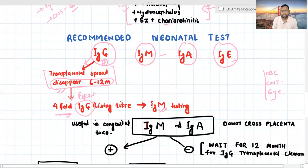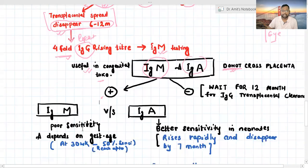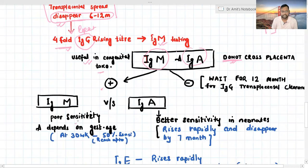Next, we can go for IgM and IgA because it is useful in determining congenital infection. They do not cross the placenta. IgG crosses, these two do not cross the placenta. If it is positive, we have to know the sensitivity pattern. IgM has poor sensitivity and it depends on gestational age. The sensitivity increases to 50% at 30 weeks of gestation. But IgA has better sensitivity in the neonate. It rises rapidly and disappears by 7 months.